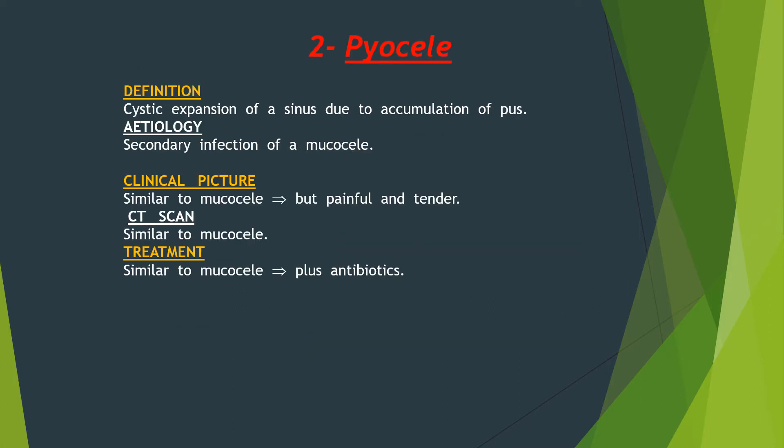Pyocele is a cystic expansion of the sinus due to accumulation of pus, which happens as a secondary infection of a mucocele. The clinical picture is the same but it is painful and tender. The investigations are similar, and treatment is the same as for mucocele but with the addition of antibiotics.